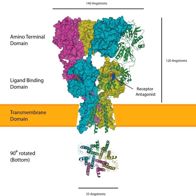The alpha-amino-3-hydroxy-5-methyl-4-isoxazolepropionic acid receptor, also known as AMPA receptor, is an ionotropic transmembrane receptor for glutamate that mediates fast synaptic transmission in the central nervous system (CNS). It has been traditionally classified as a non-NMDA-type receptor, along with the kainate receptor. Its name is derived from its ability to be activated by the artificial glutamate analog AMPA.